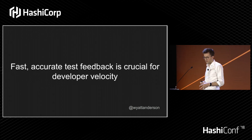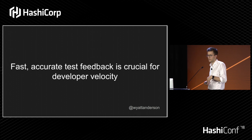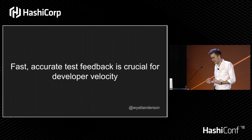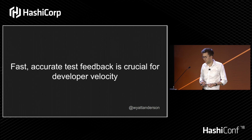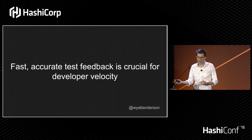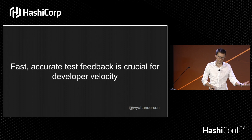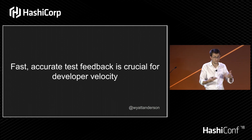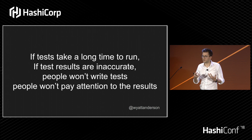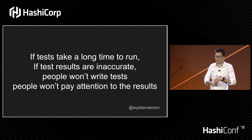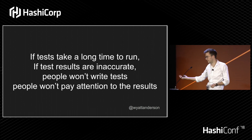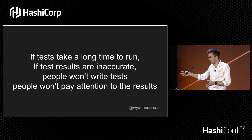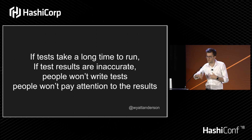Fast and accurate test feedback is critical for maintaining developer velocity at Oscar. We want our engineers to receive results of their test runs as soon as possible and with as much accuracy as possible. If you have to sit around for an hour or three hours for the build to complete, you're going to get distracted. We want to iterate quickly, integrate changes quickly, and ship features safely. If tests take a long time or results are inaccurate, people aren't going to write tests, won't wait for build failures, and will ignore them. We want to avoid that.